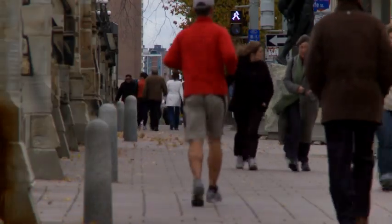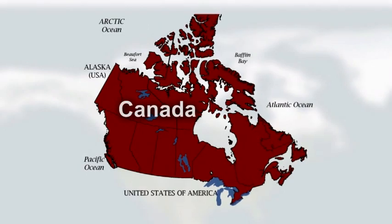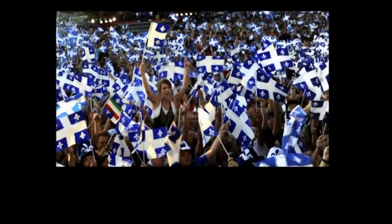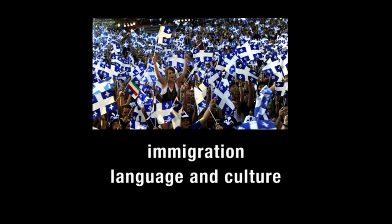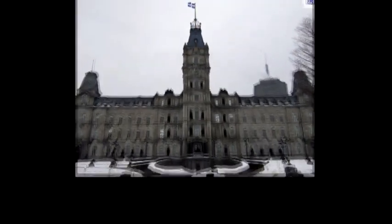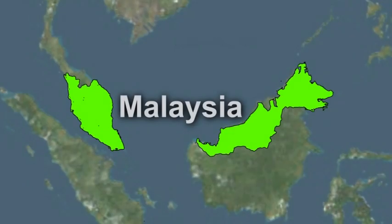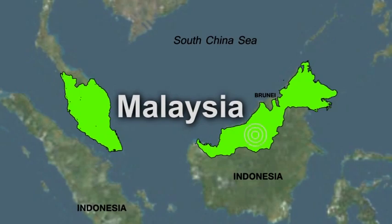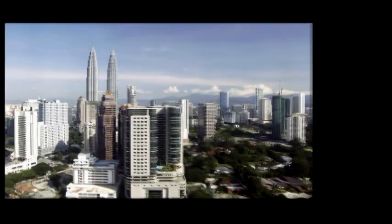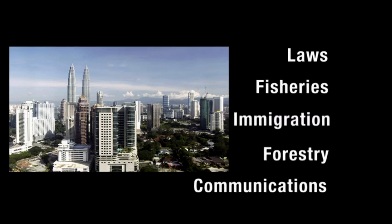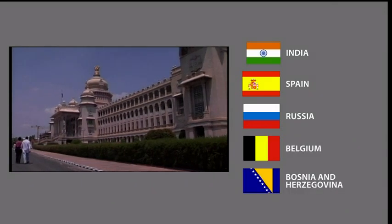Canada is an example of a federal country that does allocate some powers asymmetrically. The only predominantly French-speaking province has special powers in fields such as immigration, language, and culture. Quebec also runs certain social programs, such as pensions, which are harmonized with Canadian programs. Malaysia has special arrangements for its states on the island of Borneo — they have increased powers over native laws, fisheries, immigration, forestry, and communications. Other countries with asymmetric arrangements include India, Spain, Russia, Belgium, and Bosnia and Herzegovina.